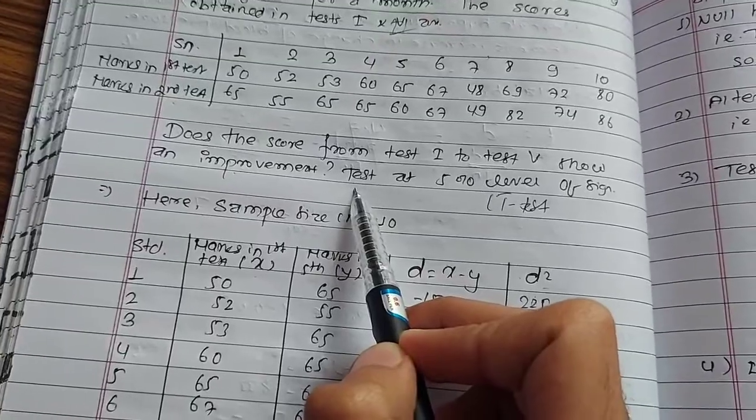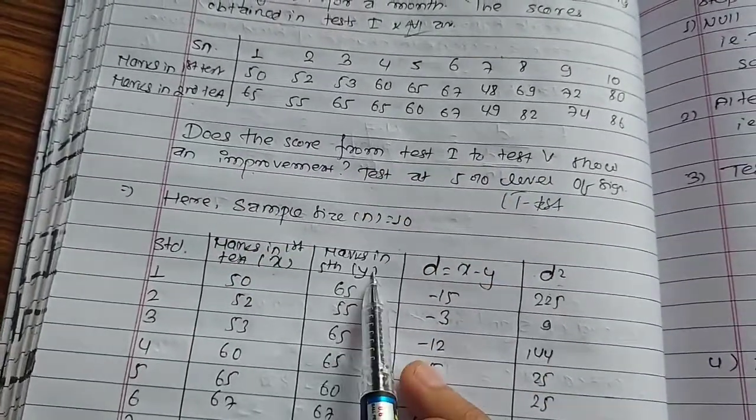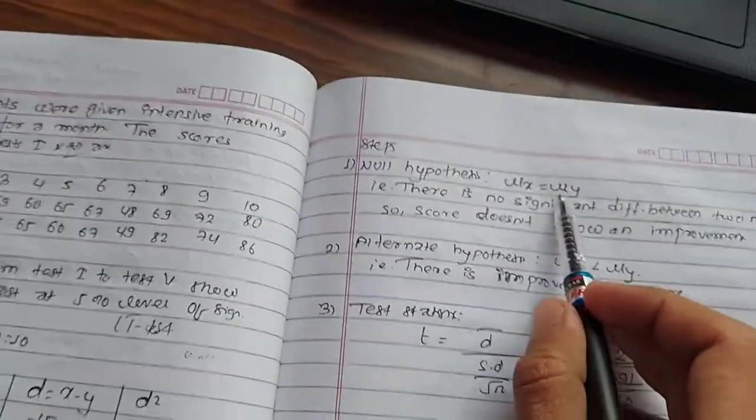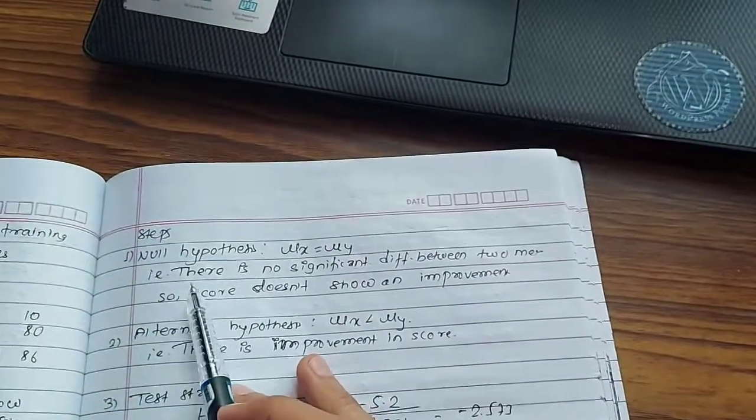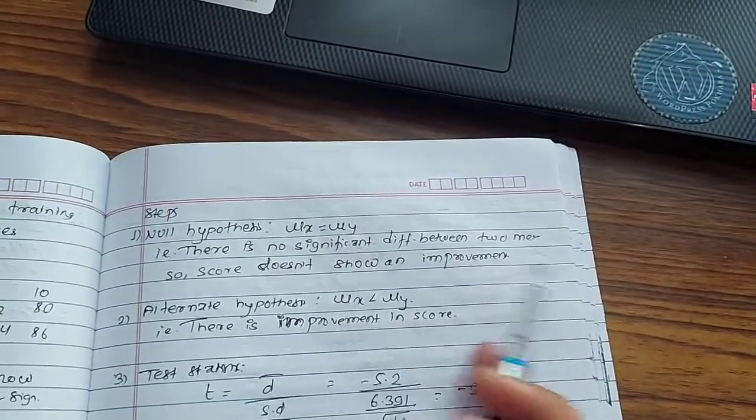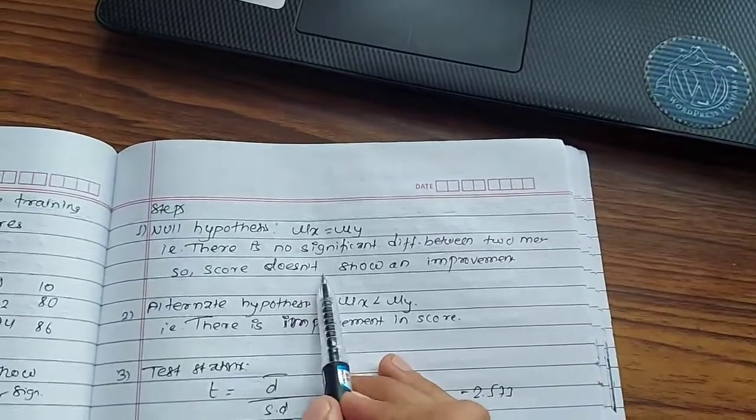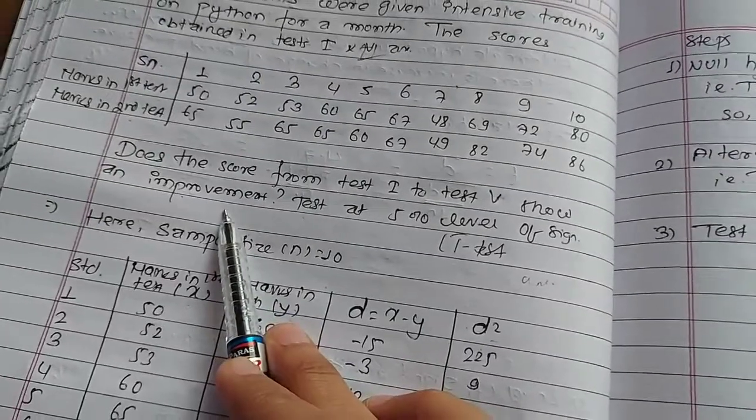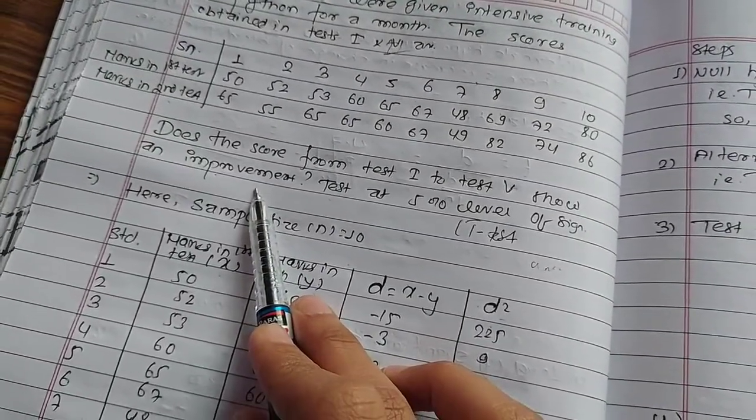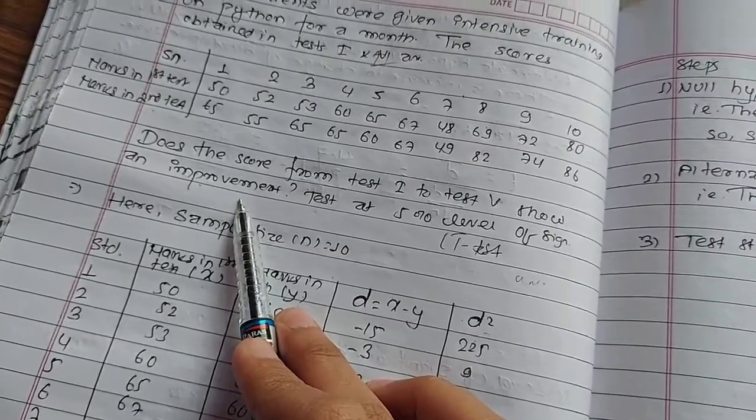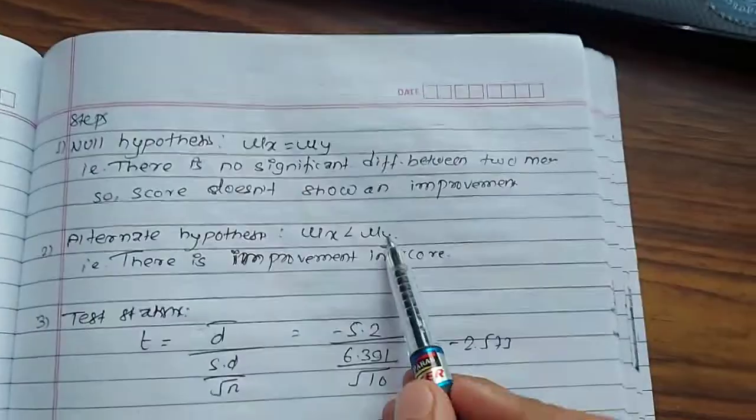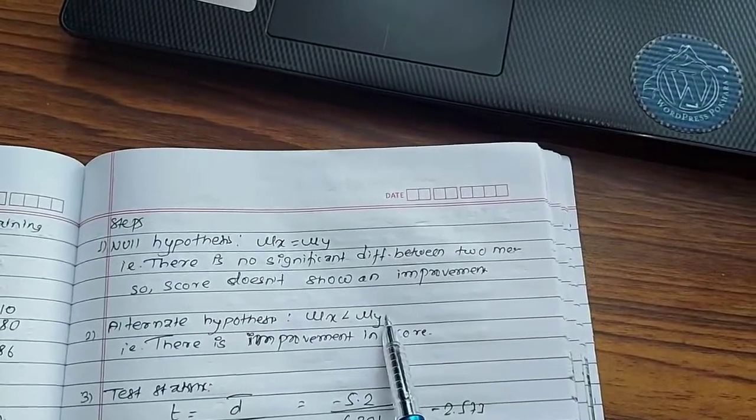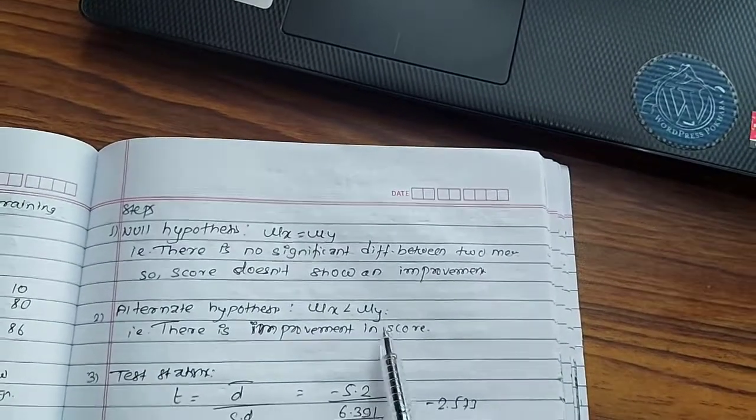Test 1 to test 5 score improvement. Before is X, after is Y. Program gives knowledge. Null hypothesis mu X equals mu Y. Alternative hypothesis mu X less than mu Y, meaning before program and after program there is improvement.